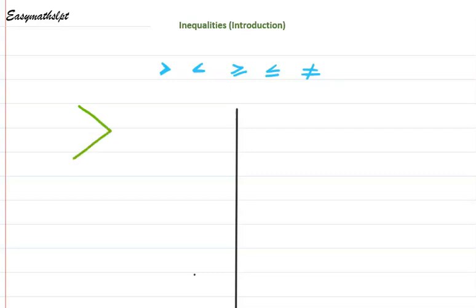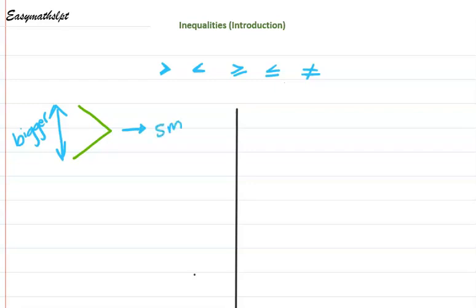Basically these four symbols are coming from this one symbol. Imagine your elbow — when you close your arm, we have this shape. The open section means that the value on this side, the open section, is bigger. The little part of your elbow, the small part, means that the value on this side is smaller. For example, if we have x and this sign and 2, this is saying that my expression on the left, x, is bigger than the expression on the right, which is 2. So it reads: x is bigger or larger than 2.